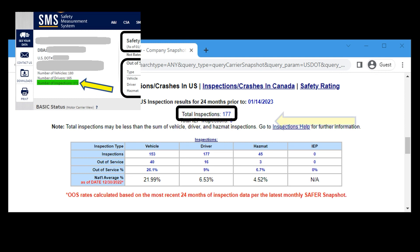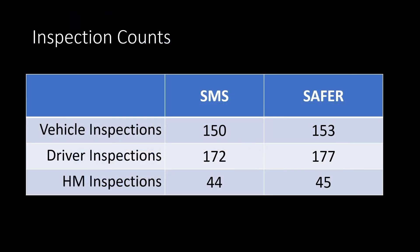This is because of this date. SAFER is looking at 24 months worth of inspections as of yesterday, while SMS looks at the number of inspections as of the day of the data cut. For this example carrier, you can see the differences: for vehicle inspections, SMS has 150 and SAFER has 153; for driver inspections, SMS has 172 while SAFER has 177; and for hazmat, SMS has 44 inspections while SAFER has 45. Most of the time you are going to see the counts in SAFER higher than the counts in SMS.